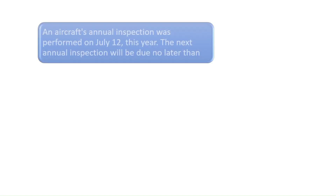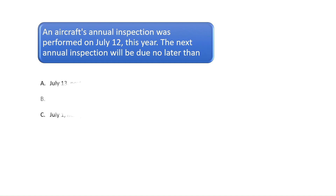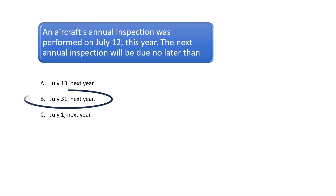Question 7: An aircraft's annual inspection was performed on July 12 this year. The next annual inspection will be due no later than? Annual aircraft inspections are due one year later at the end of the calendar month in which the initial inspection was completed. For example, if the inspection was performed on July 12, 2023, the annual inspection would be due July 31, 2024. The correct answer is B.